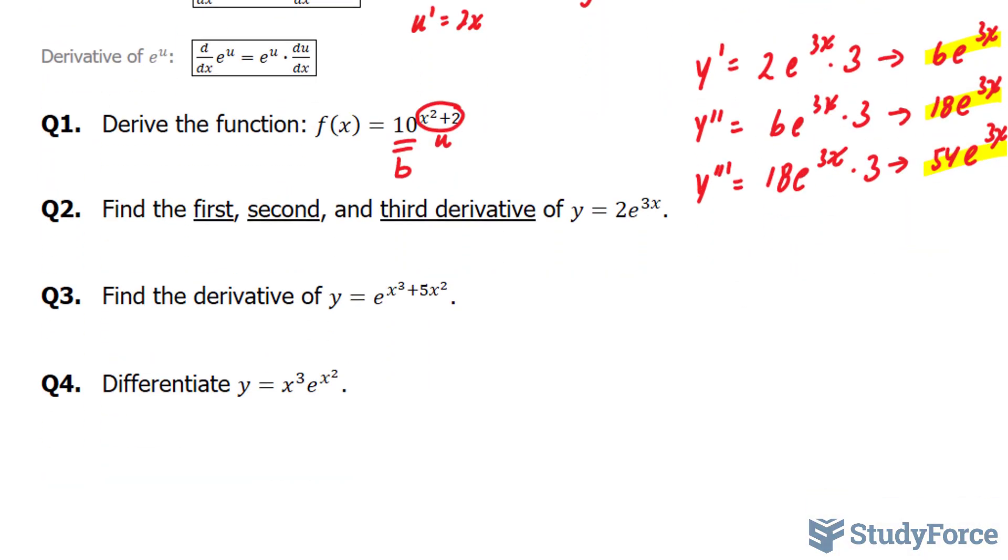Moving on to question three. Find the derivative of y is equal to e^(x^3 + 5x^2). We'll use the exact same logic as before that we did in question two. y' is equal to... I'll rewrite this the exact way it is written.